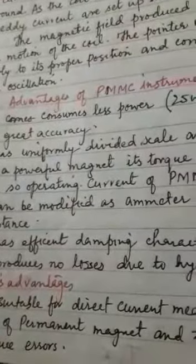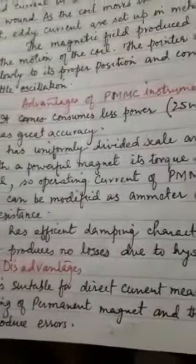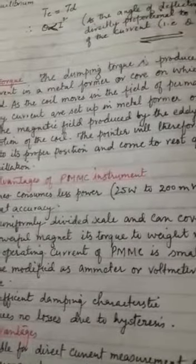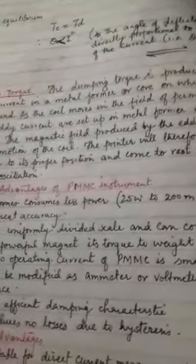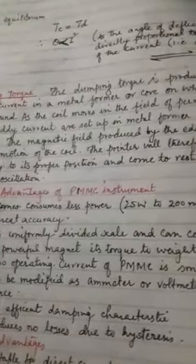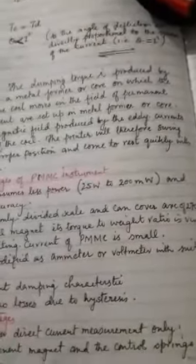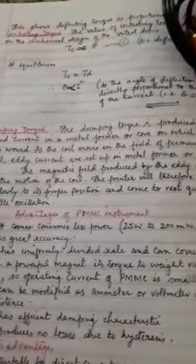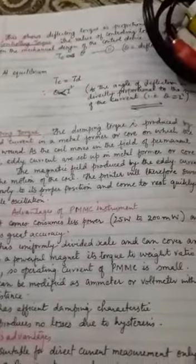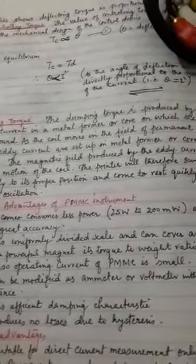Now the disadvantages. The first disadvantage is that the PMMC instrument is used for DC — direct current — only. In circuits where alternating current flows, you cannot use this instrument for measuring current or voltage. It is not suitable for AC alternating current instruments.